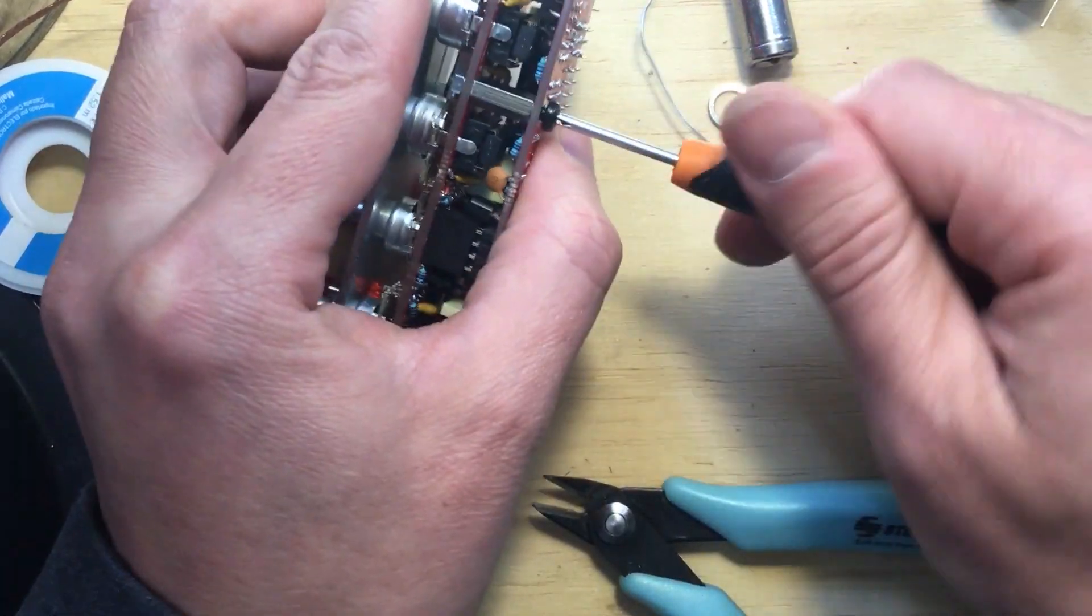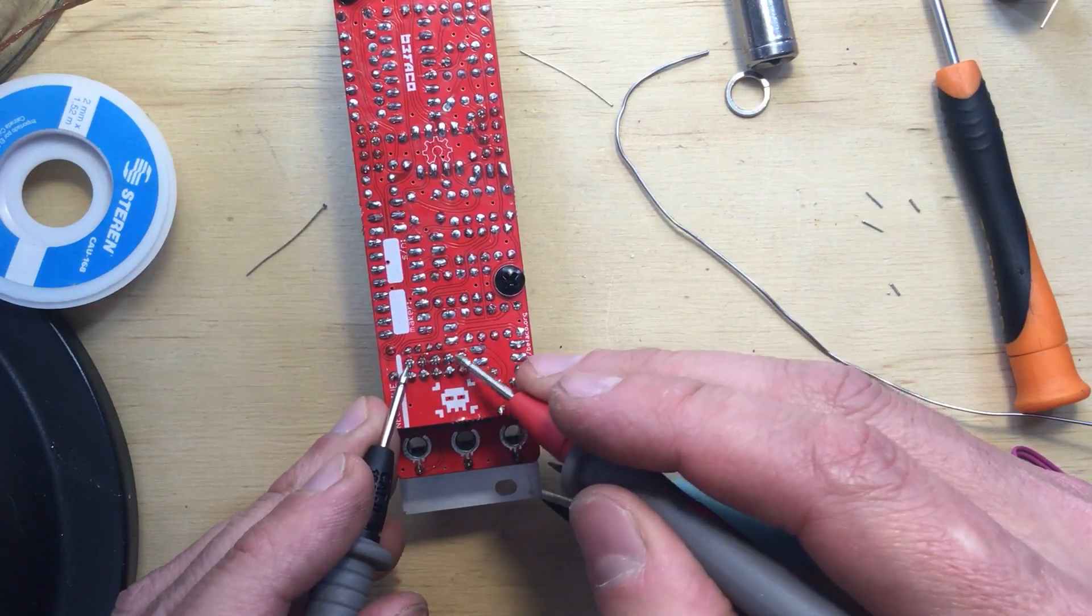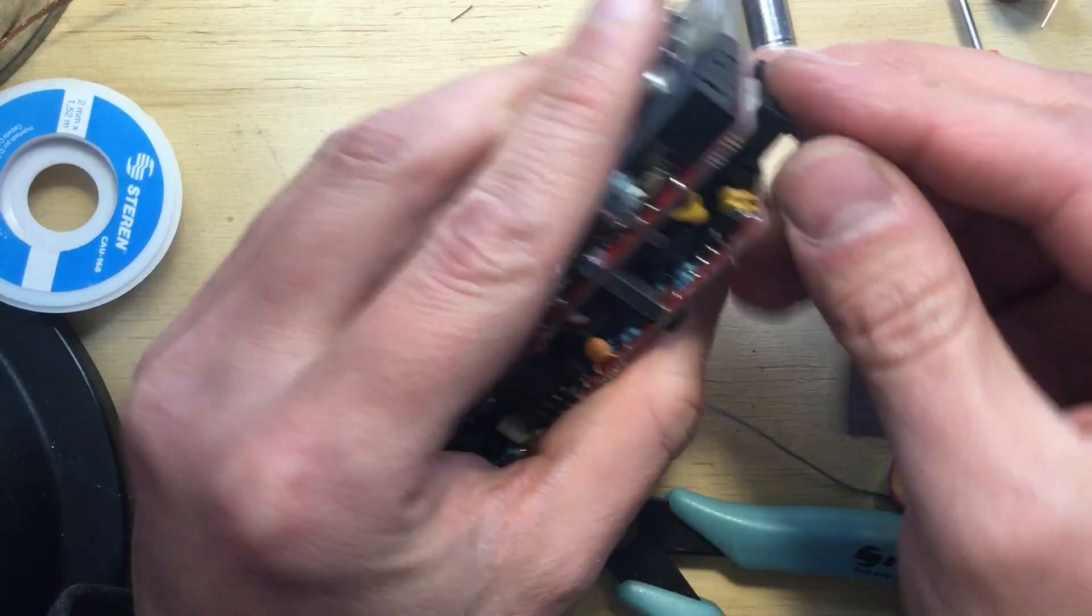I then checked the power connector for shorts, plugged in the power cable, then installed the knobs, and went on to calibrate and test it. Mine worked perfectly on power-up.